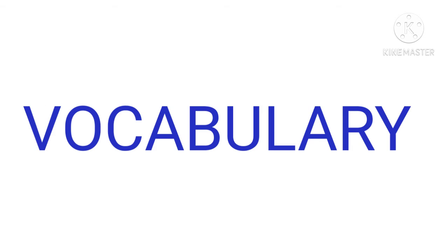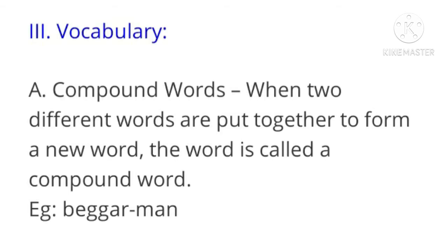Now let's do the vocabulary. Third section A: Compound words. As you know, if two different words are put together to form a new word, it is called a compound word. For example, 'bedroom' — 'bed' has a separate meaning and 'room' has a separate meaning, but when they are together they give a completely new meaning. So bedroom, beggar man, newspaper, footmarks, grandmother — all these are called compound words.